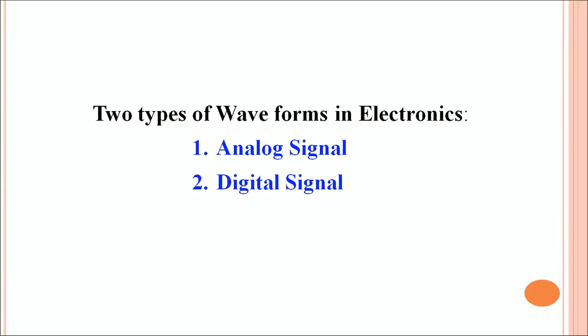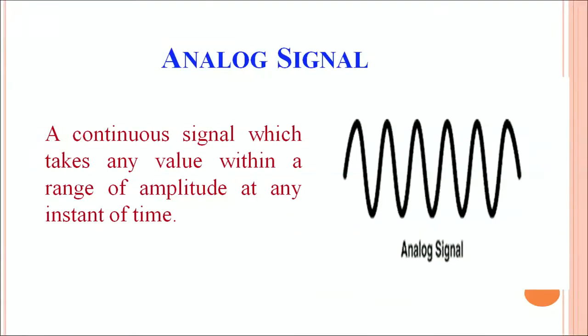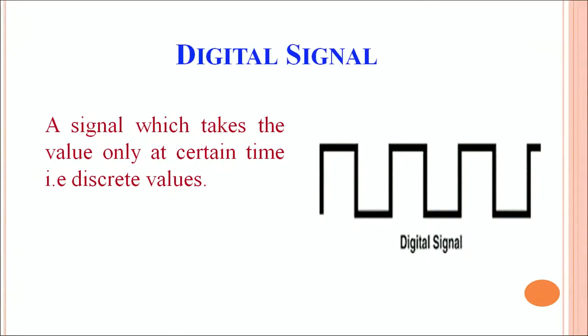In electronics we have two basic kinds of waveforms: analog signal and digital signal. An analog signal is a continuous signal which takes any value within a range of amplitude at any instant of time. It can be a sine wave, cosine wave, or any such periodic wave which varies continuously — so an analog signal is periodic and repetitive.